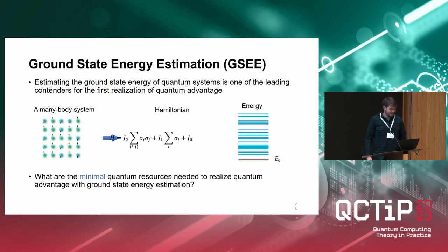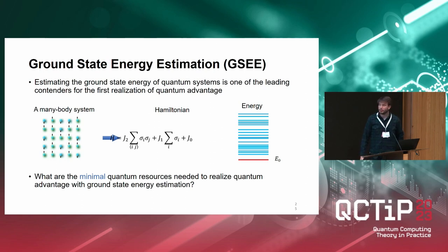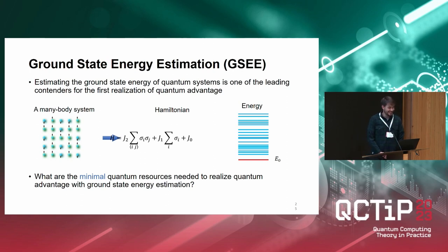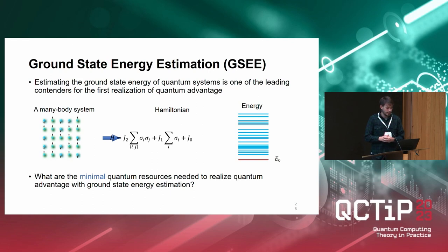Many people believe that finding ground state energies is still a very good application of a quantum computer. And the question we're asking here is: what are the minimal requirements for actually doing this, in terms of the number of operations you actually require on your quantum computer?